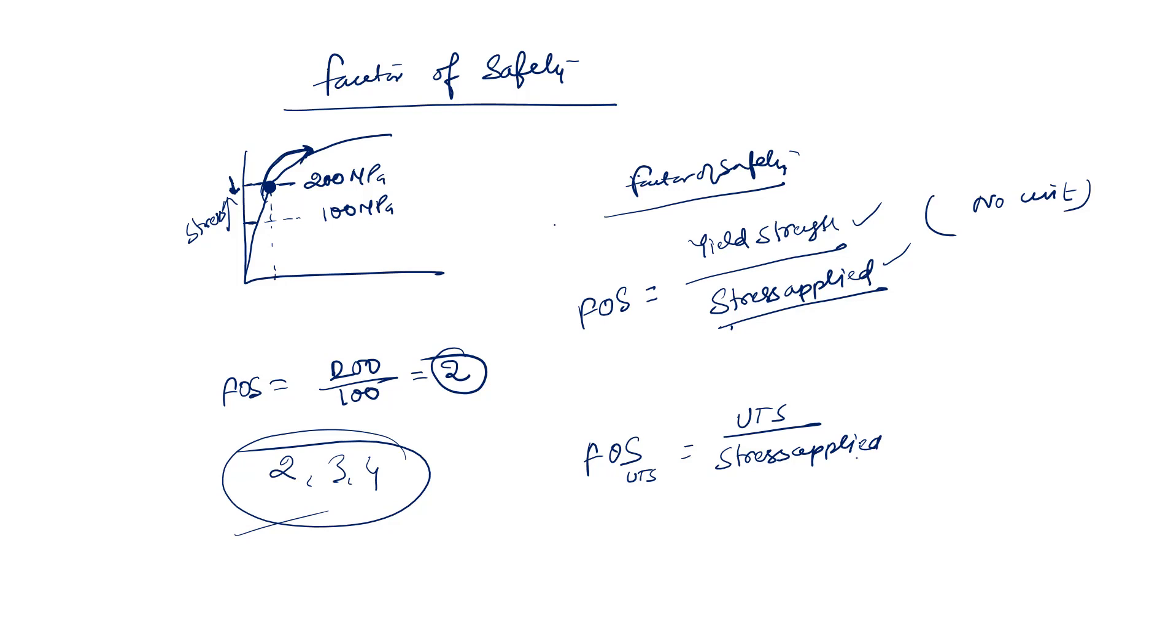So here FOS in terms of UTS will be like UTS value divided by the stress applied. This will also give you the factor of safety. Fine. Now guys, we have assumed that a force which acts on a body is continuous.